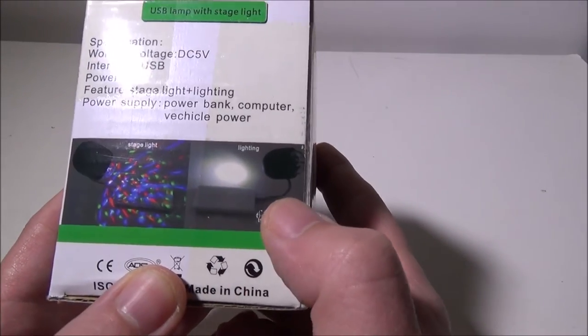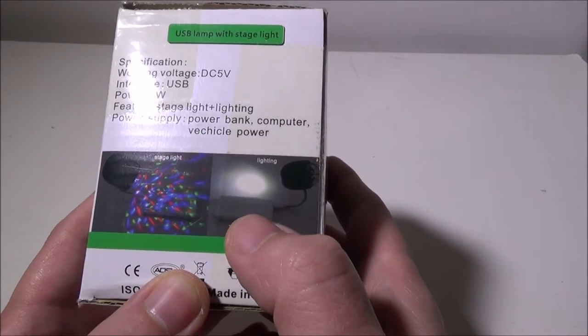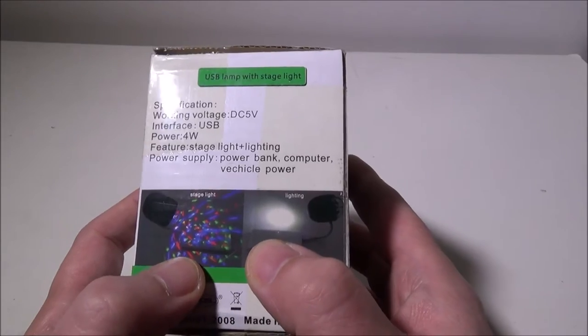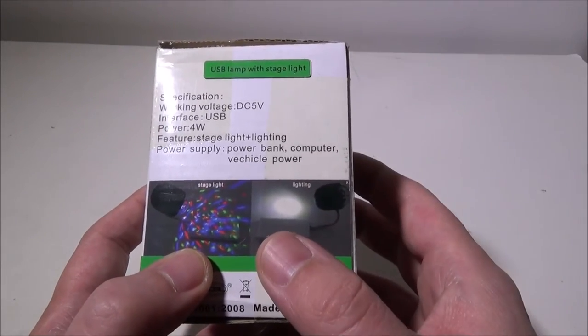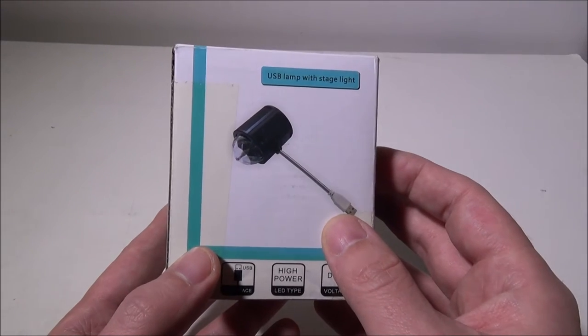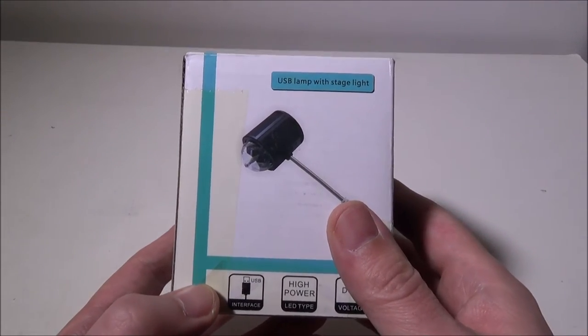As you can see here, you've got a regular white light. You can run this off of any USB port on your computer or a power bank or an AC adapter, which we'll do today. Then they have like a stage light that actually rotates and looks really cool. You can pick this guy up on Amazon for $9.59 at the time of this video. I'll leave a link in the description below where you can check that out.